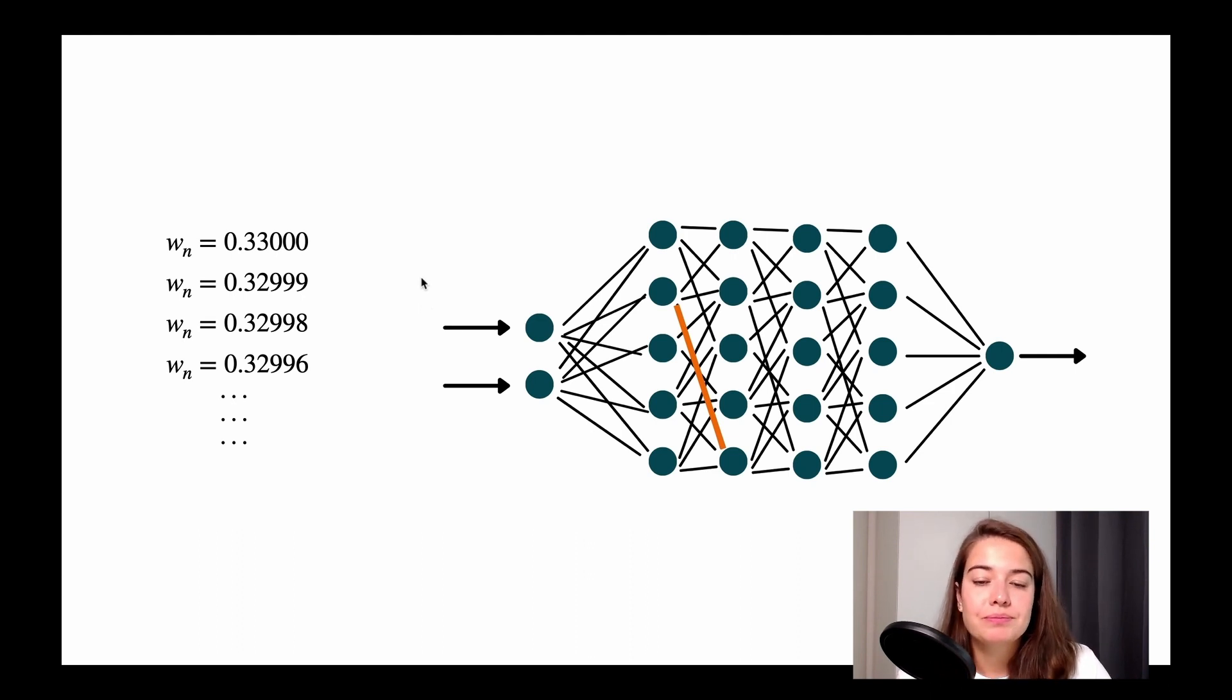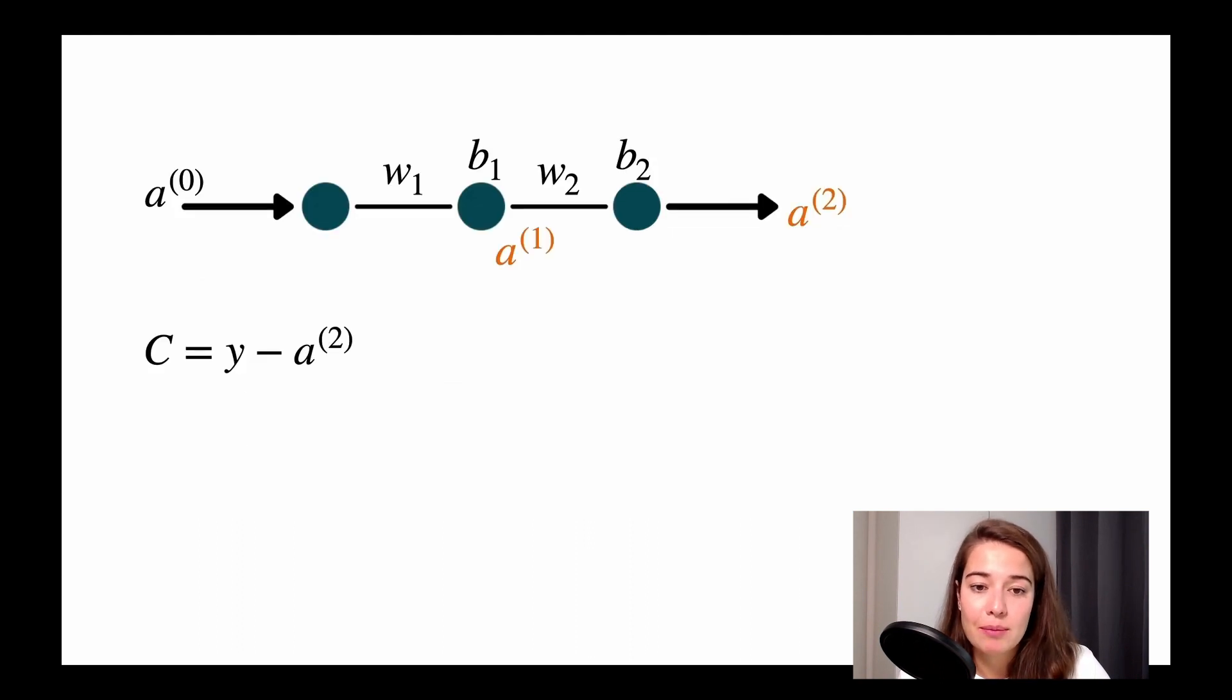So why does this happen? To do that, let's go back to a previous lessons example. So this example, we talked about this when we were talking about backpropagation. So let's say this is a very simple network, again, one input neuron, one hidden layer with one neuron only, and one output neuron. This is the weight of the connecting connections, and the biases of the weights. And A2 and A1 are the outputs of the first layer, and the output layer.